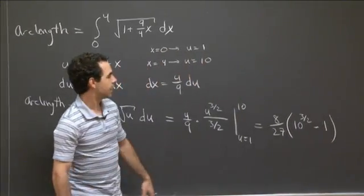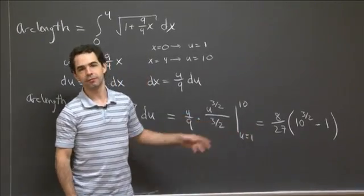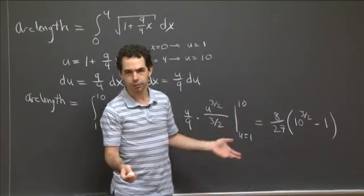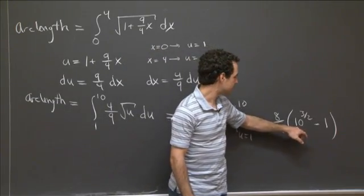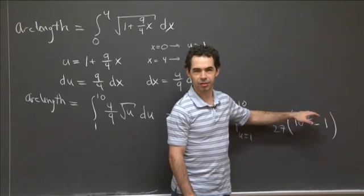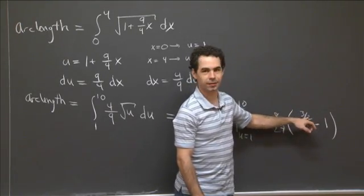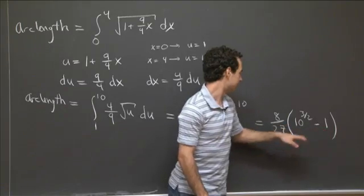OK, so now if you wanted to get a decimal approximation for this number, you could put this into a calculator. You can also kind of eyeball what this is, because 10, the square root of 10 is just a little bigger than 3, so this is bigger than 27. So this is bigger than 26.